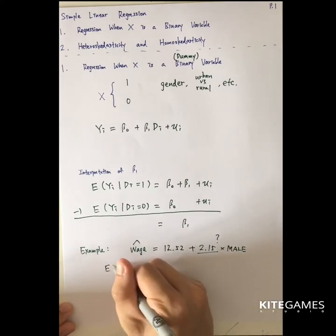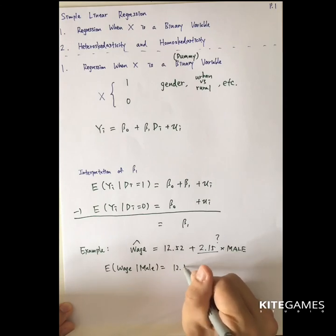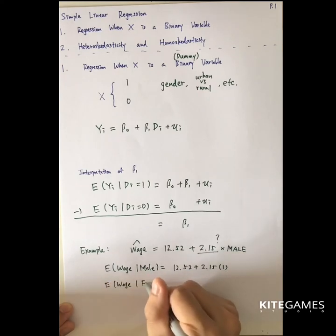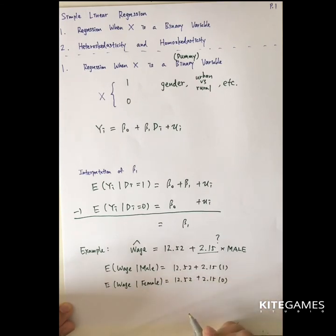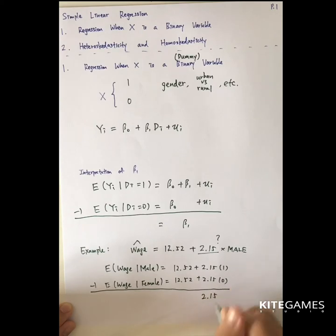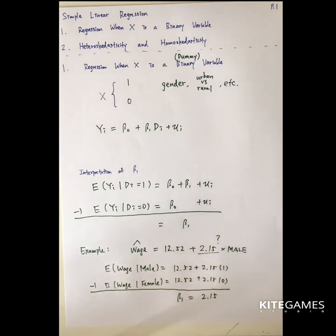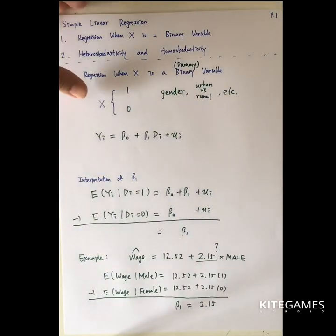To interpret 2.15, do two steps. First, calculate the expected wage if you are male: this equals 12.52 plus 2.15 times 1. The expected wage if you are female equals 12.52 times 1, i.e., 12.52. Then do the subtraction and you find that the difference is exactly 2.15. Therefore, beta 1 of 2.15 stands for the difference in wage between male and female — if you are male, your wage is 2.15 more. This is the way to quantify qualitative data using dummy variables.